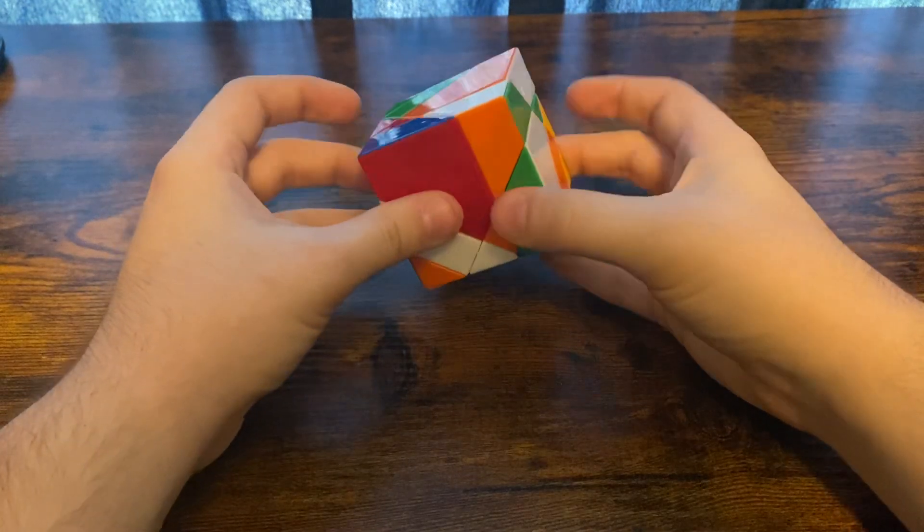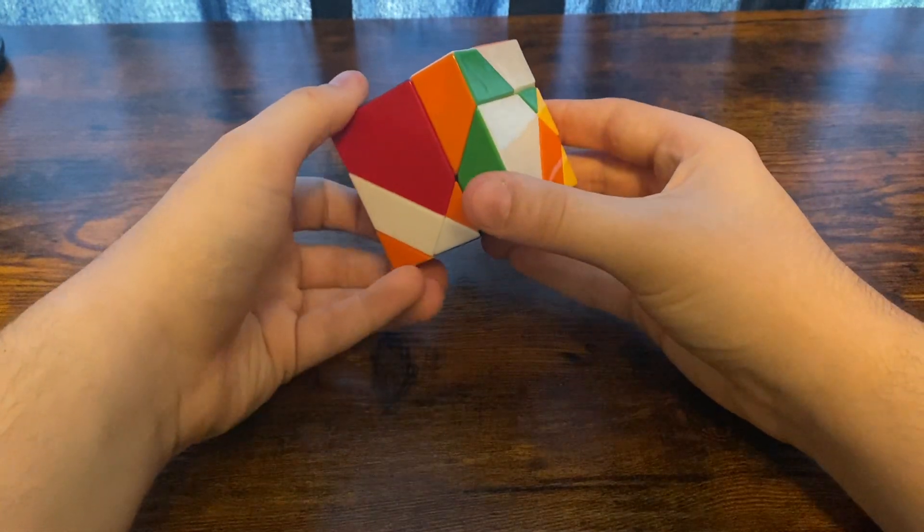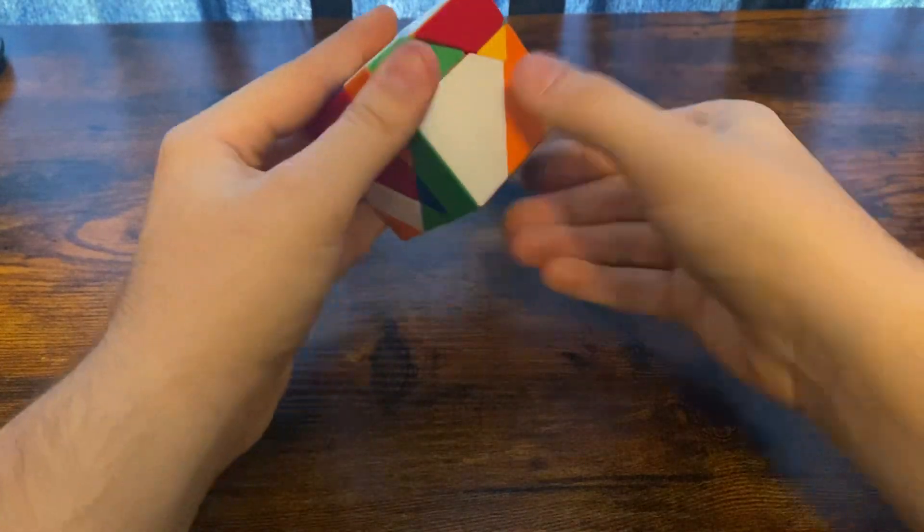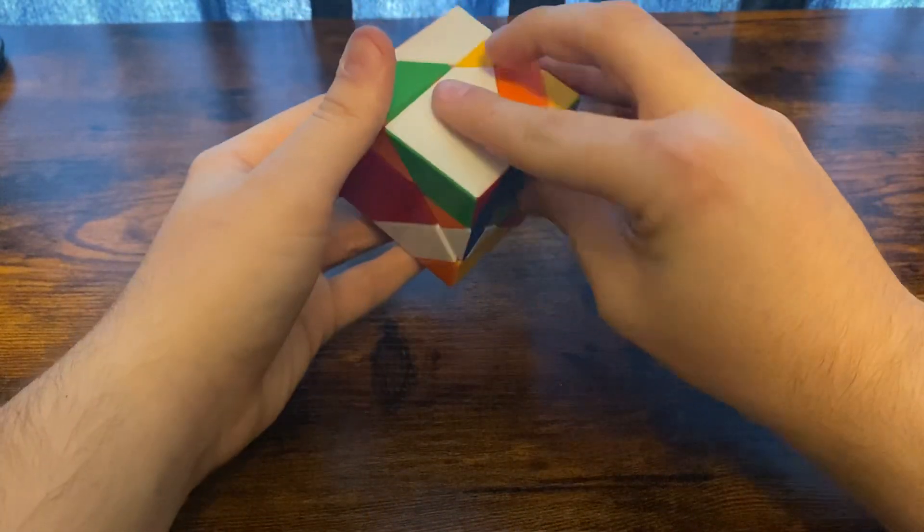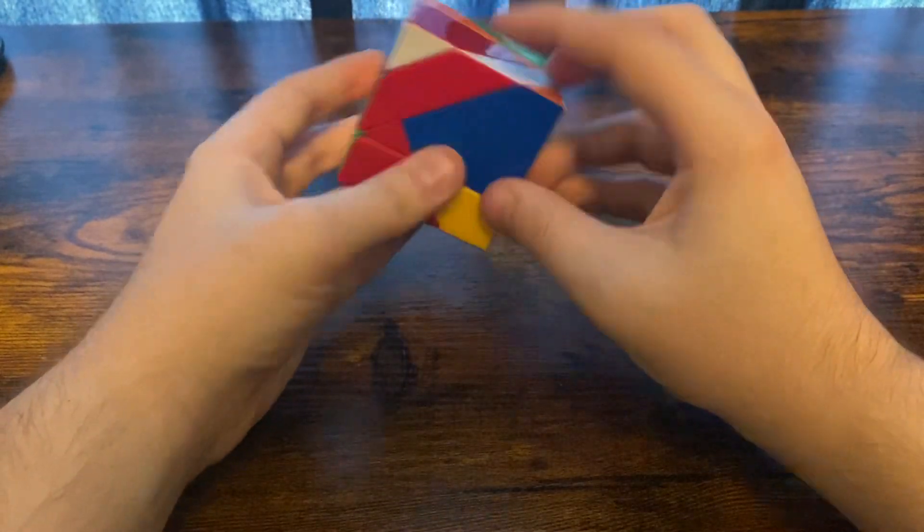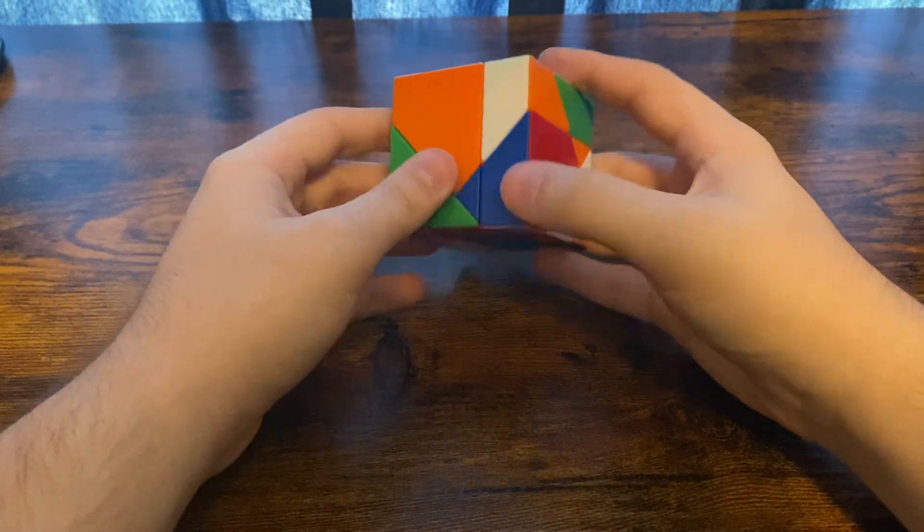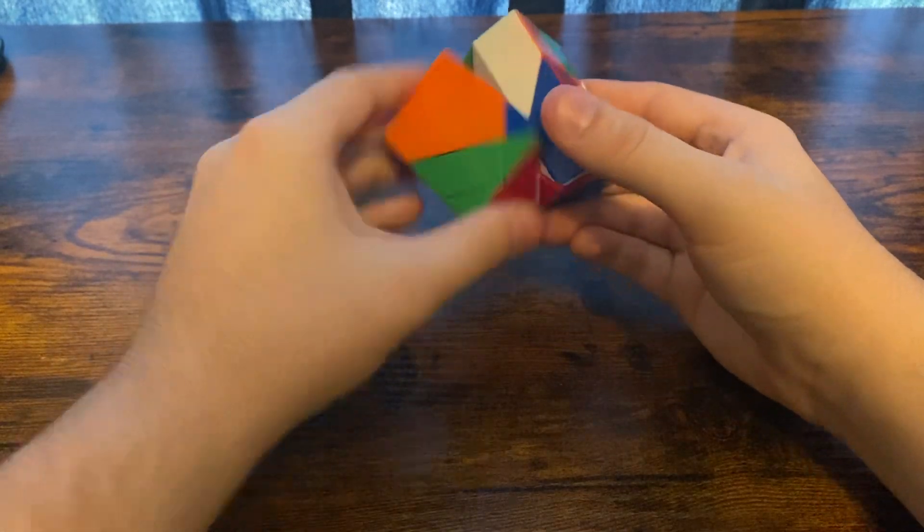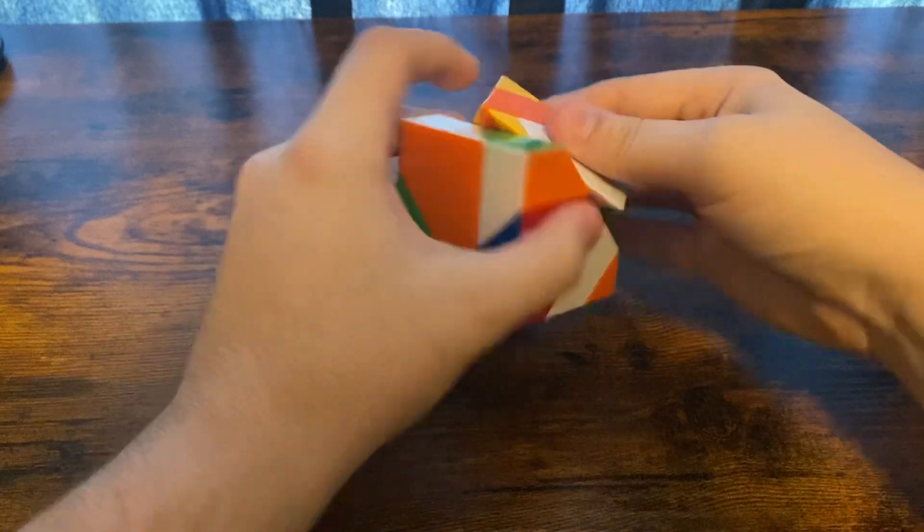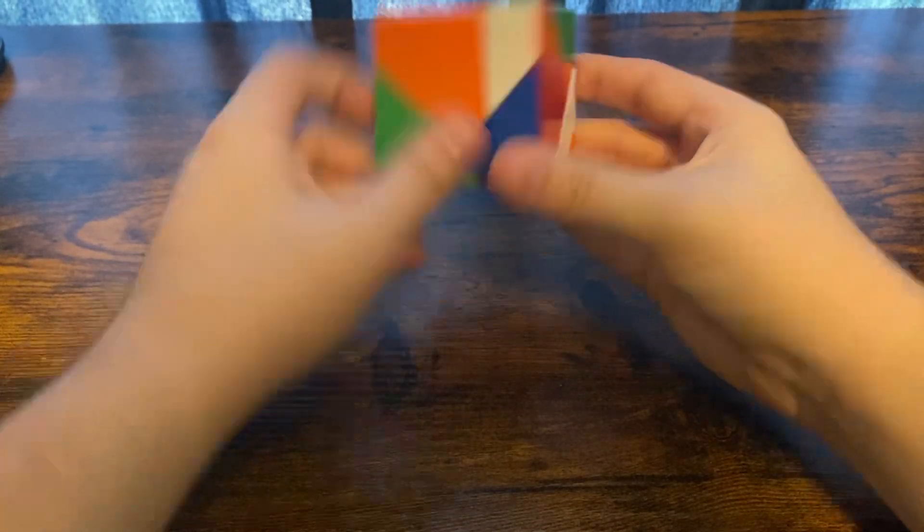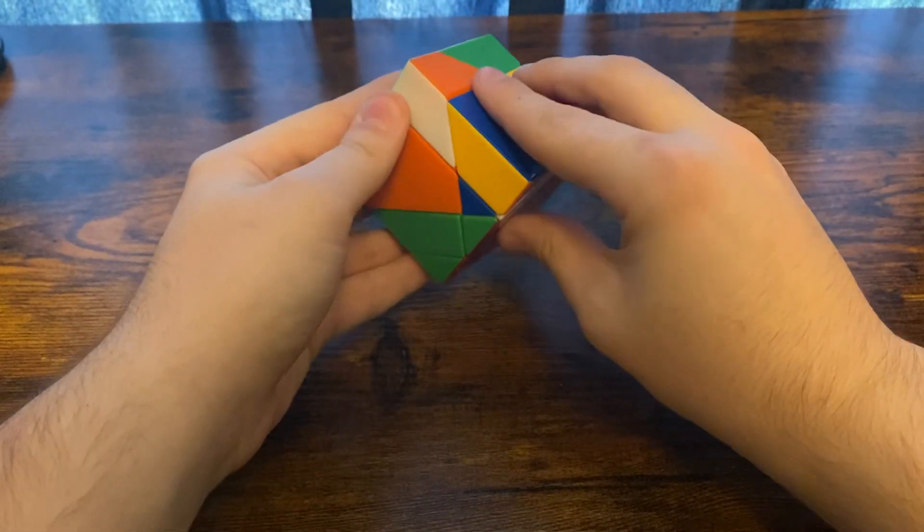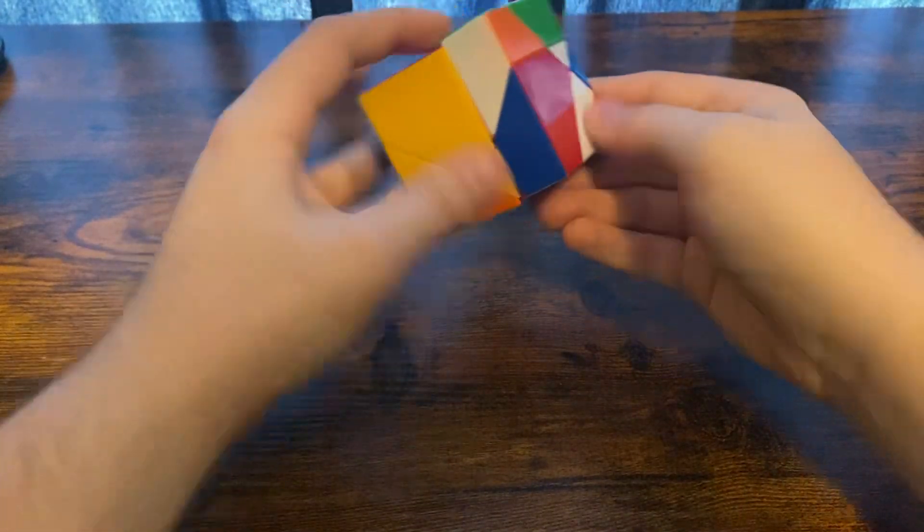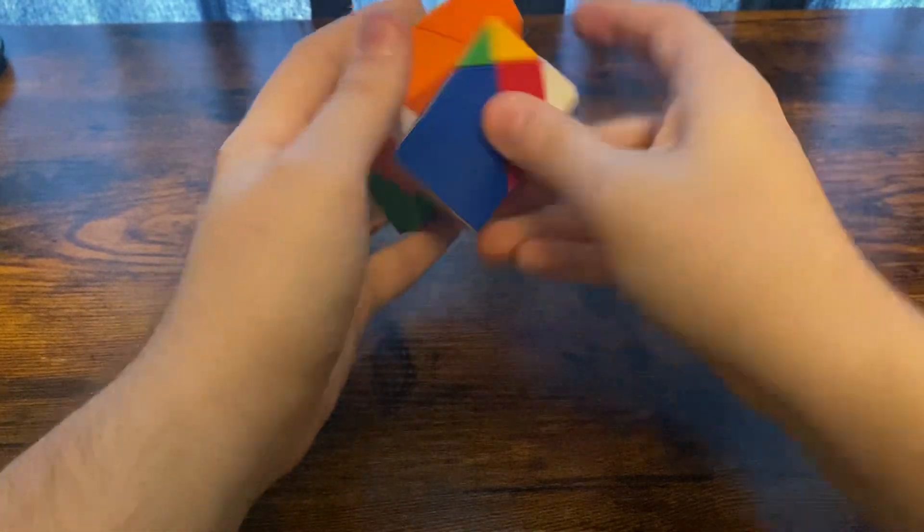If two of them are flipped, you want to hold them in the back like this and do this algorithm. That will fix them. The algorithm is, I'm just going to call this L, this R, and this B, so it's L R L R B R B R L R L R B R.